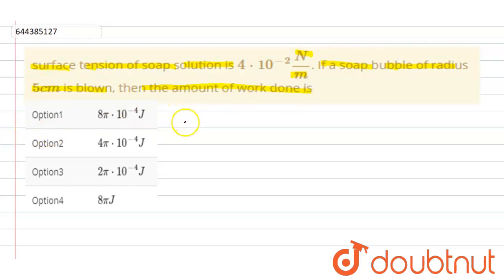Here the initial area is 0, and the final radius is given as 5 centimeter, that is 5 × 10^-2 meter.